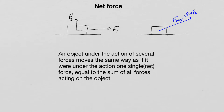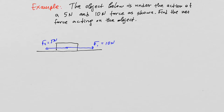Let's illustrate this with an example. An object is under the action of a 5N and 10N force. Find the net force. The 10N force is trying to move the object to the right and the 5N force to the left. To calculate the net force, I must decide which direction is positive — the standard accepted definition is positive to the right and negative to the left.